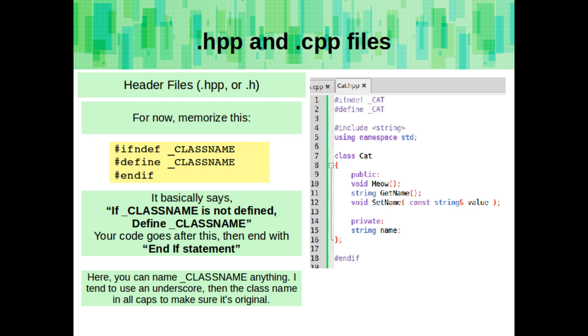Basically it says that if this class name is not defined, we need to define the class name, and at the very end is the end if statement. So if the compiler tries to read this file, and it's already found this class name before, it's not going to re-add this class to our program. So it won't say that it's re-declared, because it's already been declared.